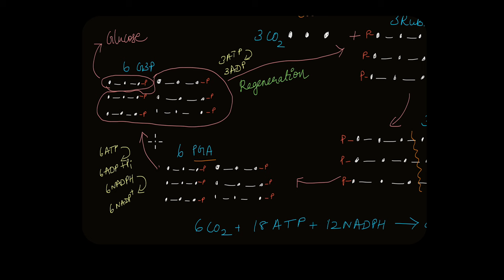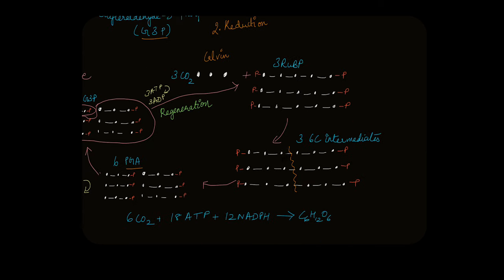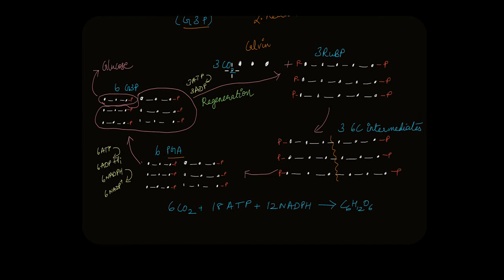The remaining five G3P molecules, carrying 15 carbon atoms, are used to regenerate the three molecules of RuBP (3×5 = 15 carbons). So the entire balanced Calvin cycle: 3 CO2 + 3 RuBP → 6 PGA → 6 G3P, one of which goes to glucose and five of which regenerate RuBP. But even now we're left with only one G3P (3 carbons) for glucose production, and glucose's formula is C6H12O6, so three more carbons are needed.